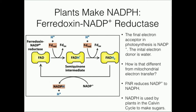Let's reverse it. What is the initial electron donor in photosynthesis? Water. What is the final electron acceptor in cellular respiration? Oxygen. They are basically sort of reverses of each other. In cellular respiration, we go from oxygen to water. In photosynthesis, we go from water to oxygen.